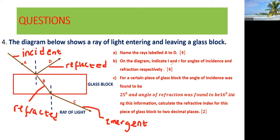Now they're saying on the diagram indicate I and R for angles of incidence and refraction respectively. So what you do is you simply indicate the angle of incidence. The angle of incidence is actually an angle between the normal and the incident ray. Then the angle of refraction is that angle which is in between the normal and the refracted ray.